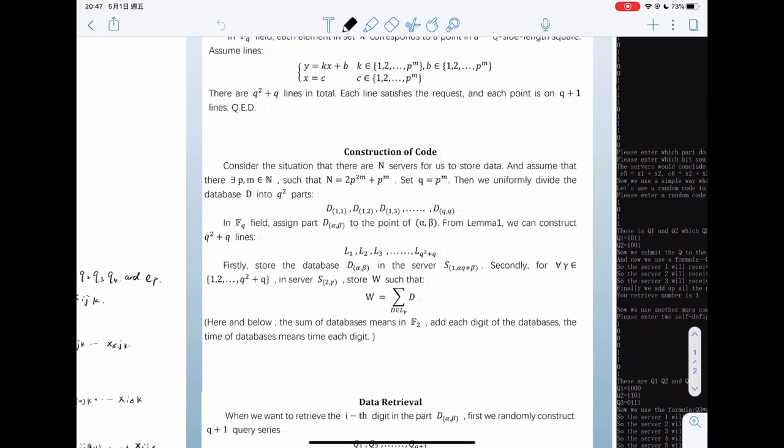Then we are going to construct the code. We consider a situation that there are n servers for us to store data. And we are going to divide the database d into d^2 parts.